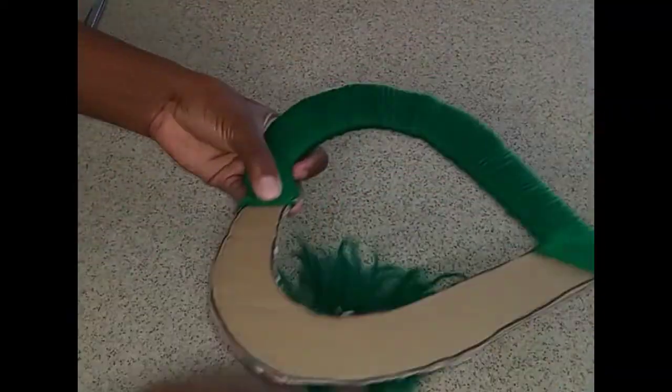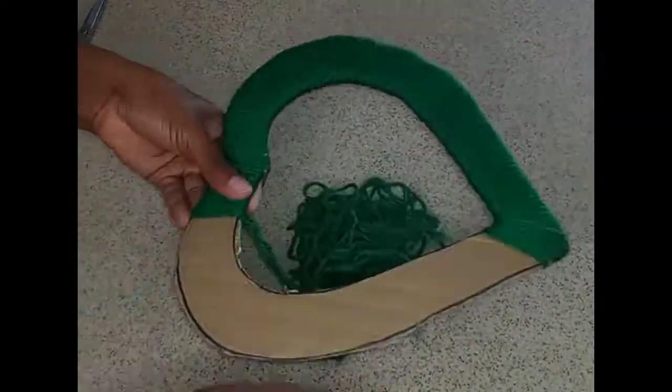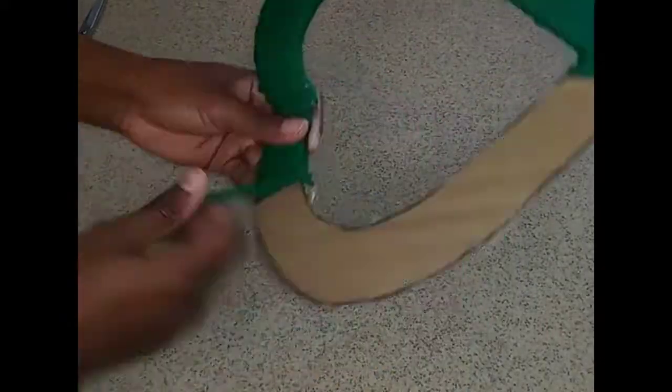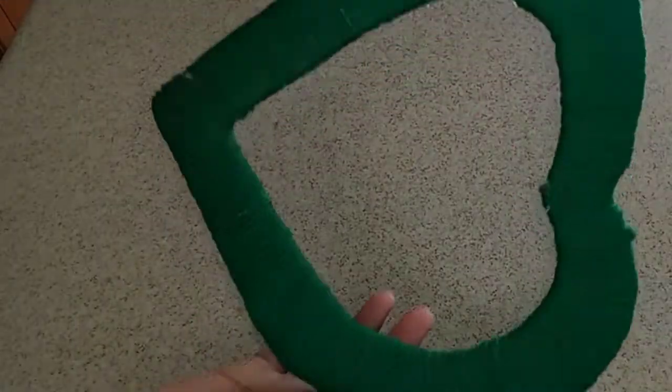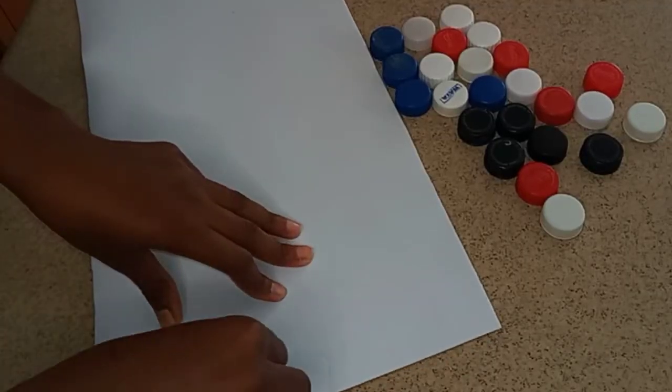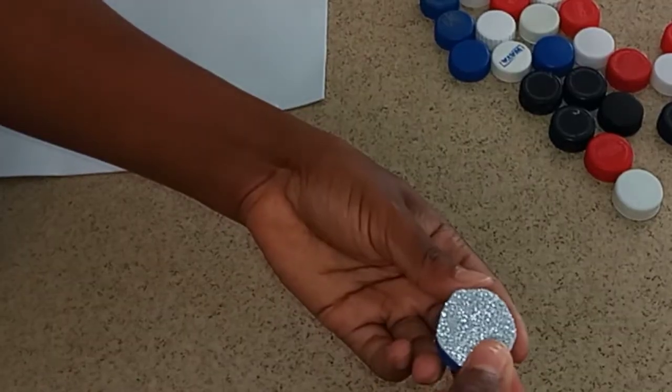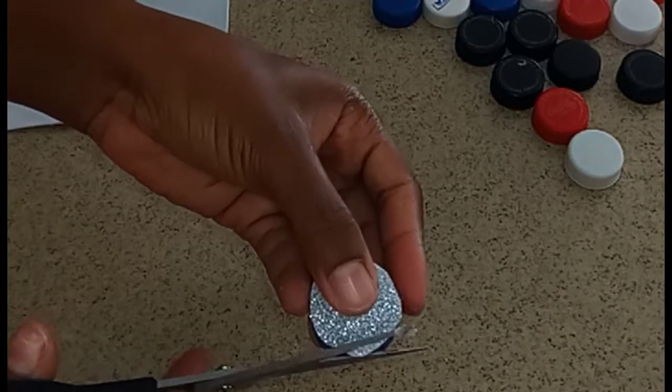After you have completely wrapped your cardboard, you're going to go in with your plastic caps. We're going to be using this piece of foam paper to cut out some little circles to cover the caps. I went in with my corks and used it to make a little indentation which made it easier to cut out the shape.